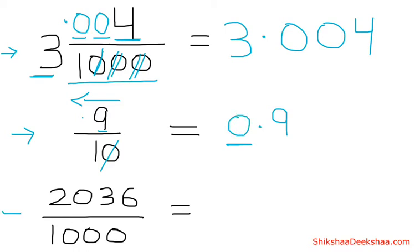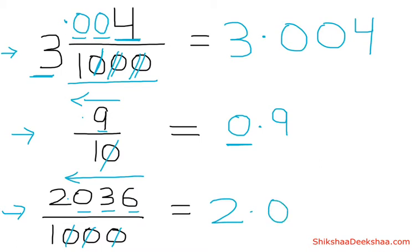Next we have two thousand thirty six by thousand. We have three zeros at the bottom, so we count three digits and then put a point: one, two, three, and then put a point. Our answer is two point zero three six. I hope you understand how to convert fraction to decimal.